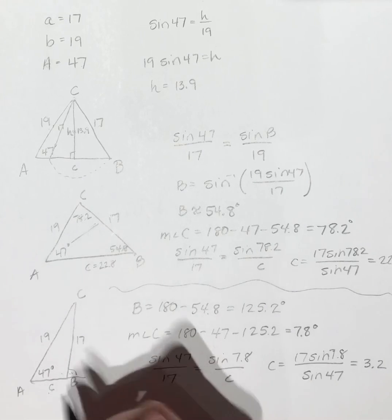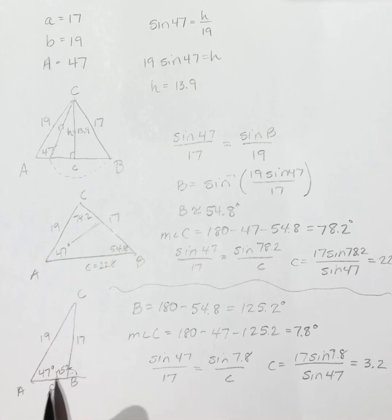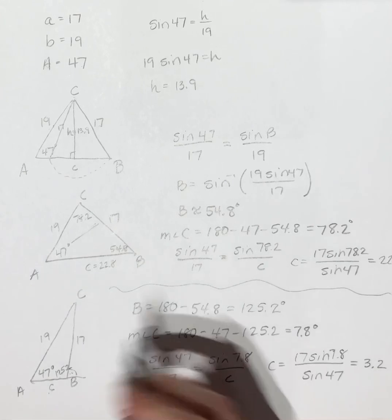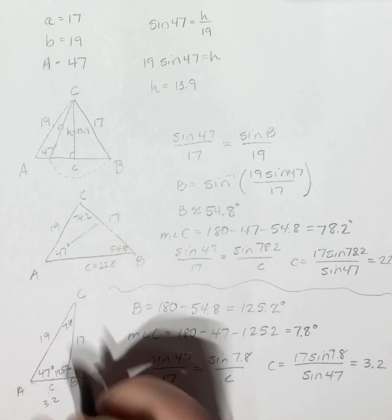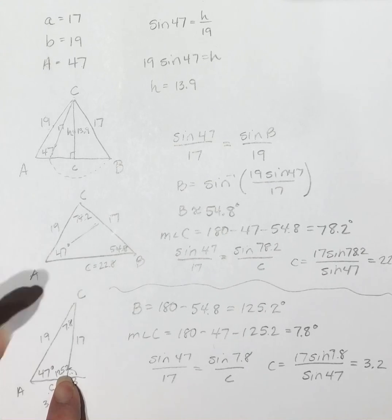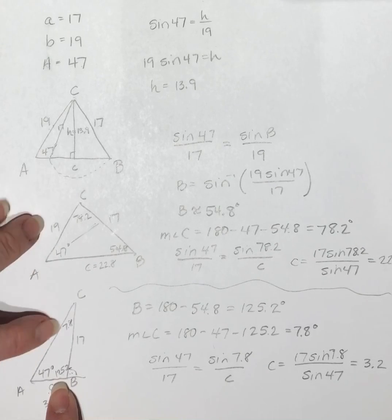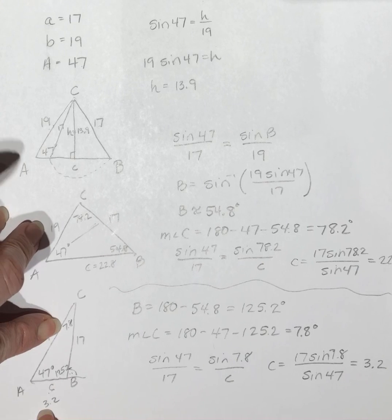And then this one: angle B was 125.2, I didn't really leave myself a lot of room, angle C was 7.8, and side c is 3.2. Largest angle, longest side; smallest angle, smallest side.